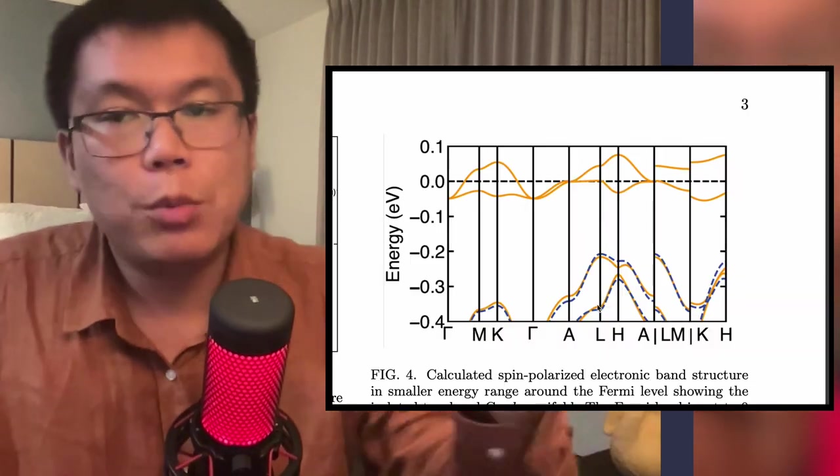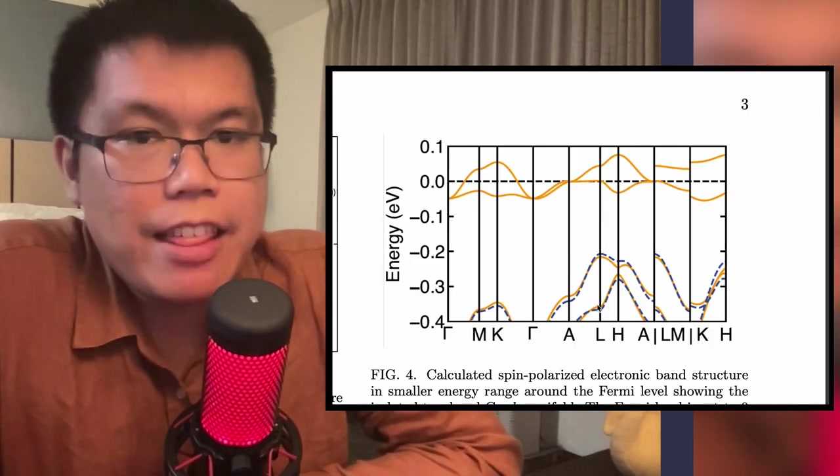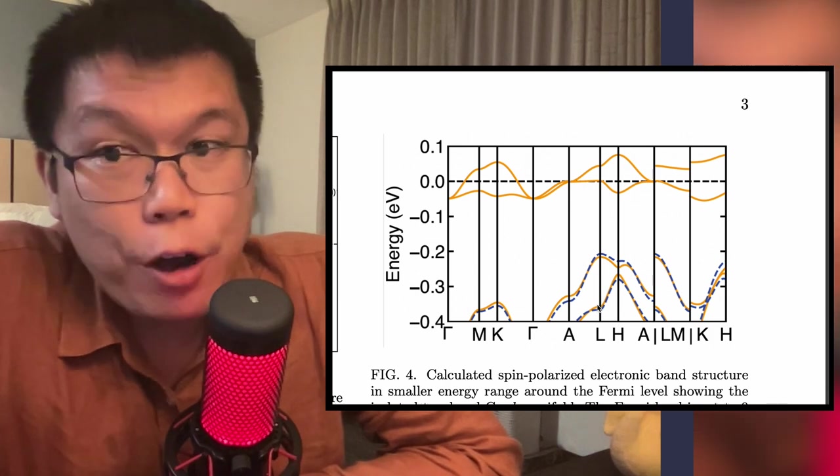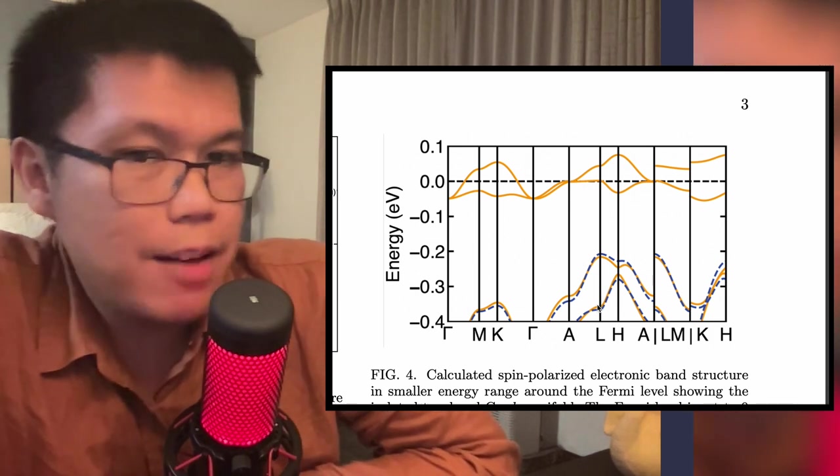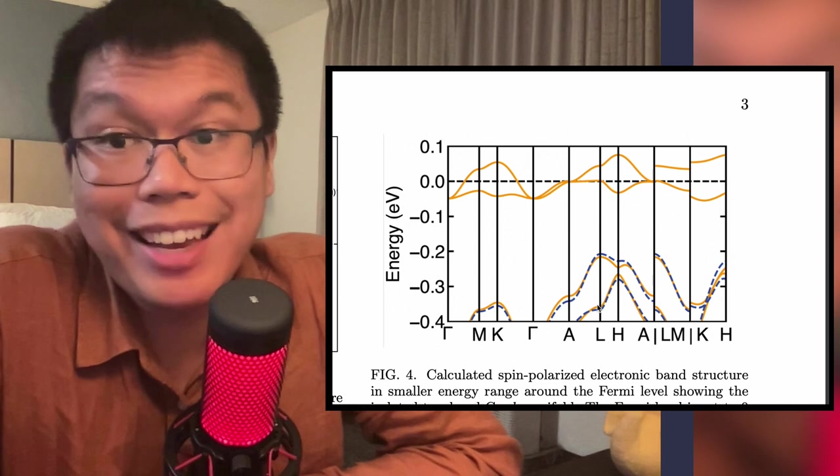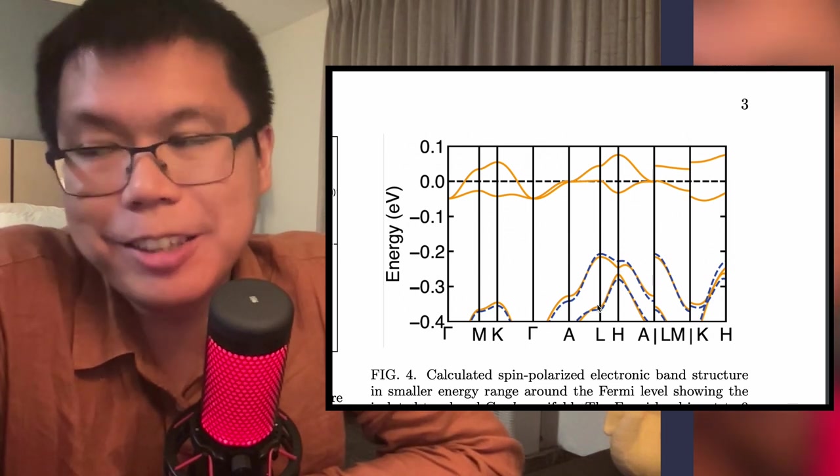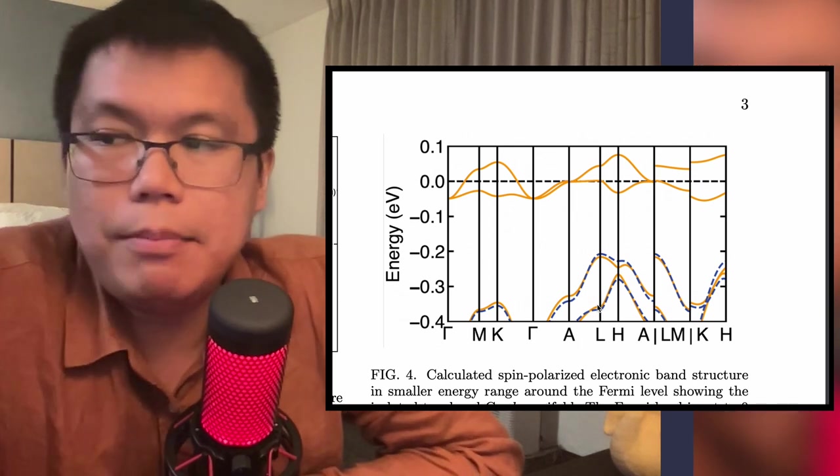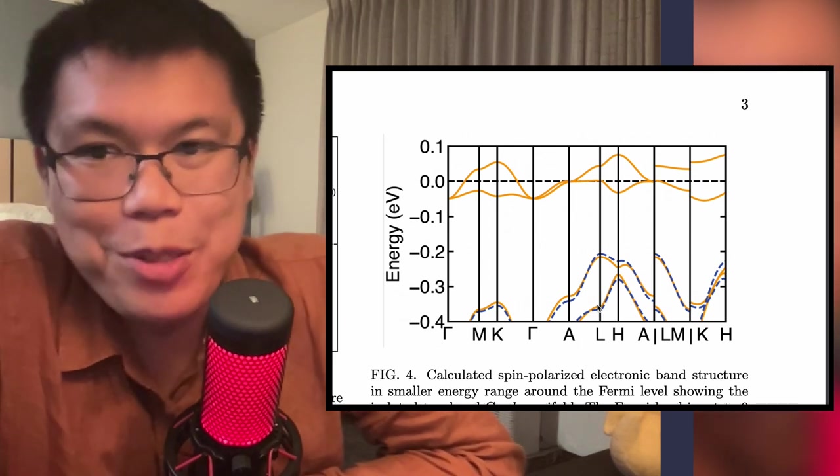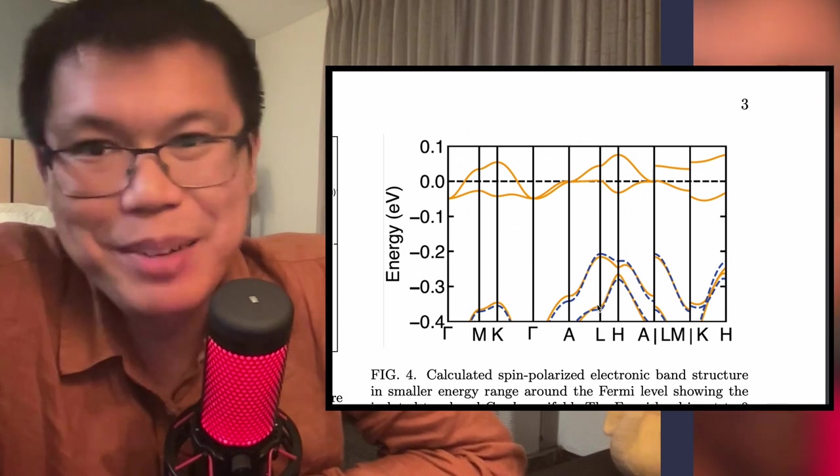But what does this paper tell us then? What's interesting about it? Basically, this flat banding is a sign of something weird. I, off the top of my head, can't think of any material that does express this flat band at around zero. It's possible there are none. It's also possible that I just don't know the band structures of every known material.